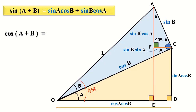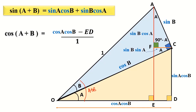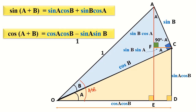We proceed to cosine of A plus B, which equals OE over 1. Since OE equals OD minus ED, we will have cosine A multiplied with cosine B minus sine B multiplied with sine A. Rearranging the order of multiplication, we have the addition formula: cosine of A plus B equals cosine A cosine B minus sine A sine B.